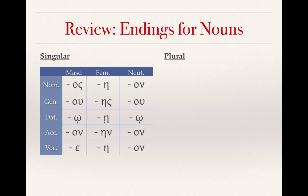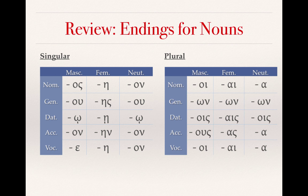We can do the same thing with plural nouns. Again, we have the five cases in the rows and the three different genders in the columns. The plural endings are: nominative: oi, ai, ah; genitive: on, on, on; dative: ois, ais, ois; accusative: ois, us, ah; vocative: oi, ai, ah.